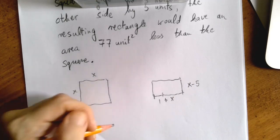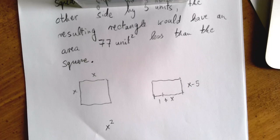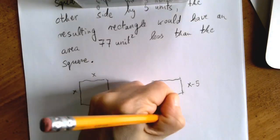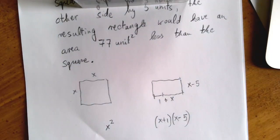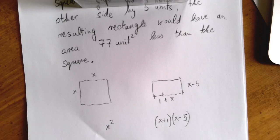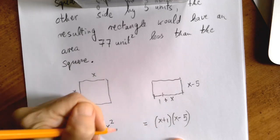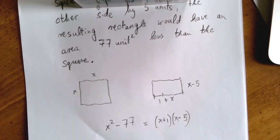The original square's area is x squared. This new rectangle's area is one side times the other side, so that is x plus 1 times x minus 5. What should give us the equation is the connection between the two areas. The resulting rectangle would have an area 77 units squared less than the square. This new area is 77 less than the original square. That's how we get 77 less.